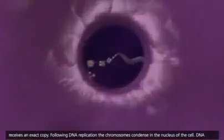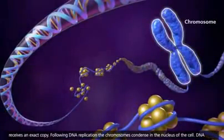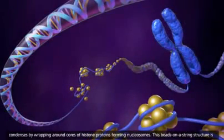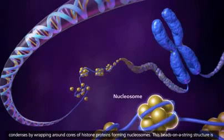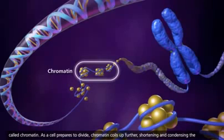Following DNA replication, the chromosomes condense in the nucleus of the cell. DNA condenses by wrapping around cores of histone proteins, forming nucleosomes. This beads-on-a-string structure is called chromatin.